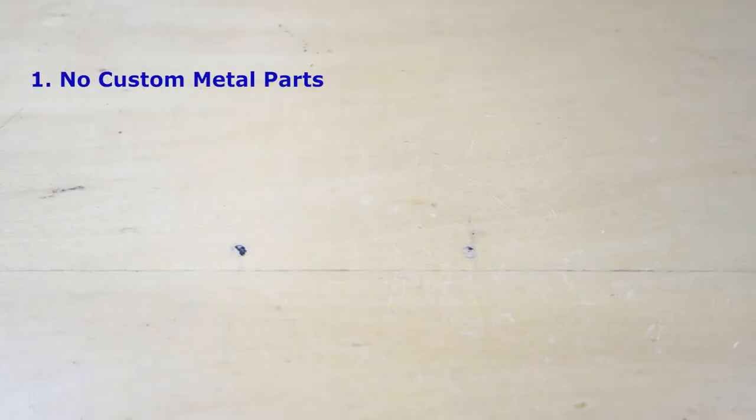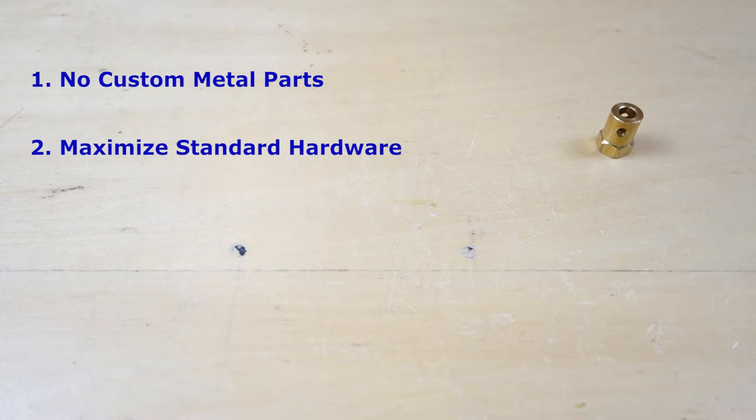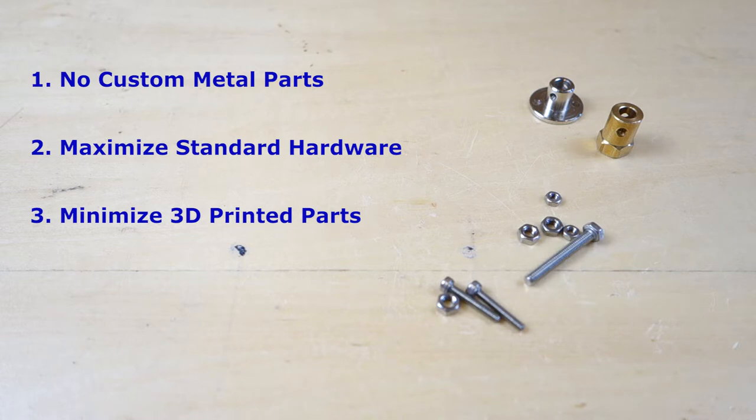So here are some design guidelines to guide us in the right direction. One, eliminate all custom metal parts. Two, use standard hardware for metal parts as much as possible. Three, use custom 3D printed parts only as necessary.